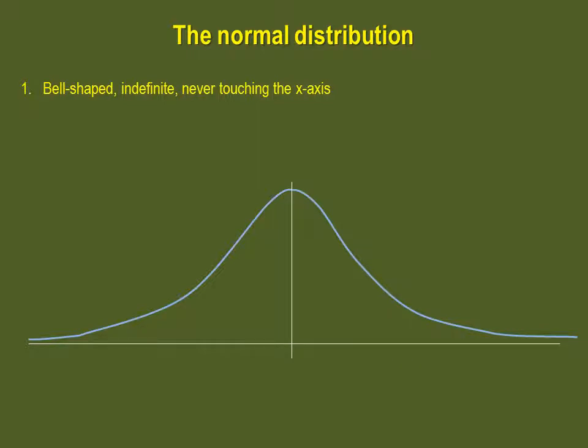The second property is that the normal curve is a unimodal distribution that is symmetric about the center, where the mean, mode, and median are equal.